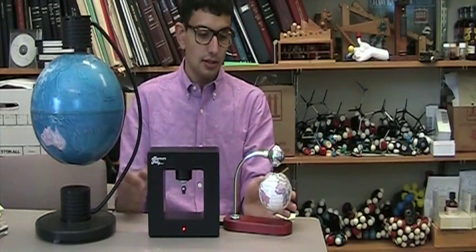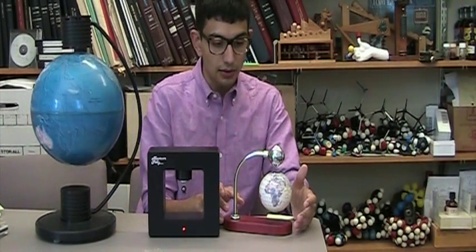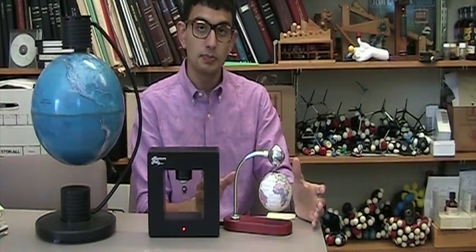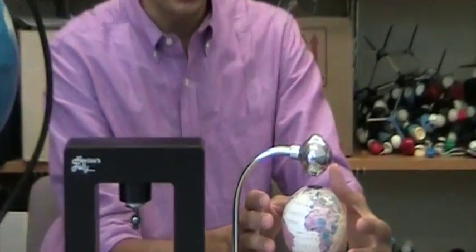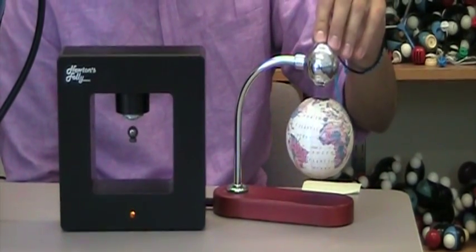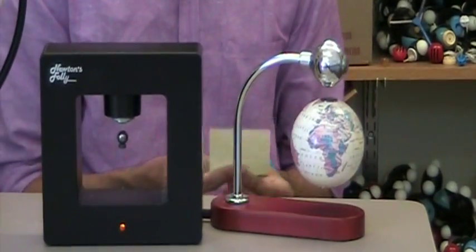The means by which they achieve this levitation varies from device to device. This particular device utilizes a microchip that turns on and off an electromagnet in the top at a particular frequency that allows this globe to levitate perfectly. There is a permanent magnet in this globe and an electromagnet in here. I will demonstrate that there are no strings attached.